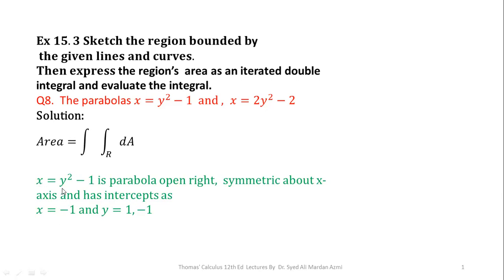The parabola x = y² - 1 is open rightward. In the equation of parabola, look at the coefficient of y². If the coefficient of y² is positive, then the parabola is open rightward. If the coefficient of square term is negative, then parabola is open leftward. So this parabola is open rightward, symmetric about x-axis and has intercepts with coordinate axes as x = -1 and y = ±1.